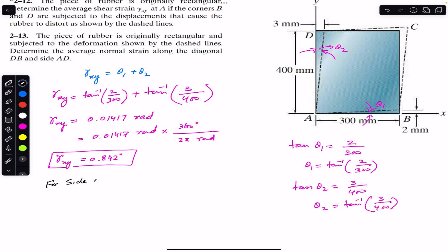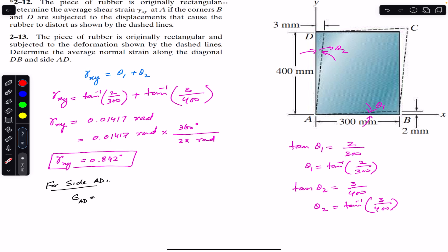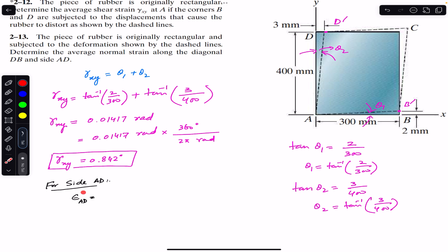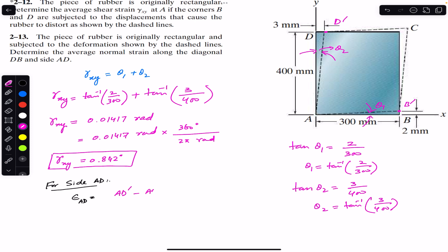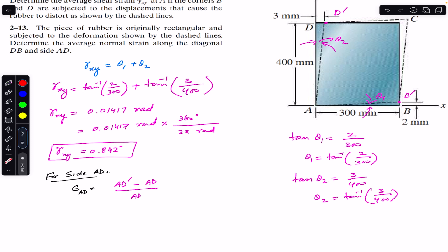For side AD, the average normal strain epsilon_AD equals the change in length. After distortion, the new positions of points B and D are D-dash and B-dash. The average normal strain in AD equals the new length AD-dash minus the original length AD, divided by AD. So we need to find AD-dash; we know AD is 400 mm. Using the right angle triangle and the Pythagorean theorem we can find AD-dash.